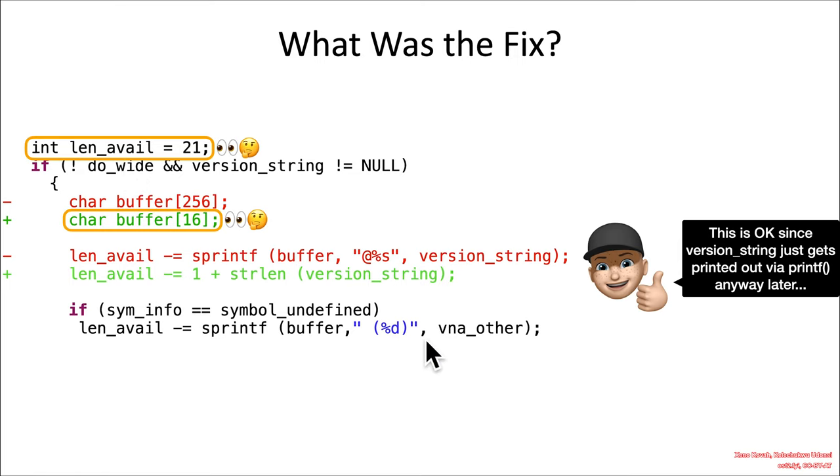The buffer's been resized to 16. The length available is 21. So, okay, well, there was some other information being put into the buffer. It was sprintf'ing out an integer for VNA_other. So 16 plus 4, okay, well, that gives us 20 plus null character. Might be okay.